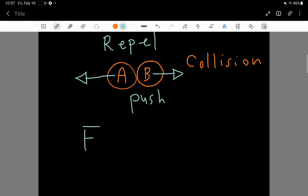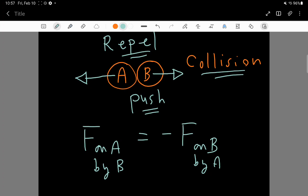And Newton's third law simply says that in this collision-repulsion-push interaction, the two objects are A and B, and the force on A by B is going to exactly equal the opposite of the force on B by A. That's all it says.